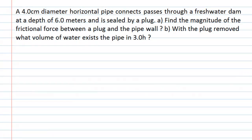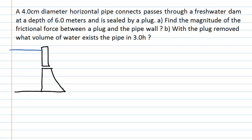This question deals with both hydrostatics and hydrodynamics. We're talking about a freshwater dam which has a 4cm diameter horizontal pipe running through it. There's the water on top of the dam. The pipe has a diameter of 4cm, and the depth of the pipe is at 6m below the waterline.